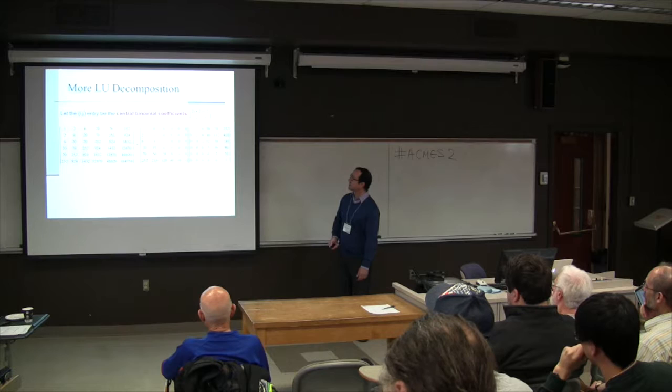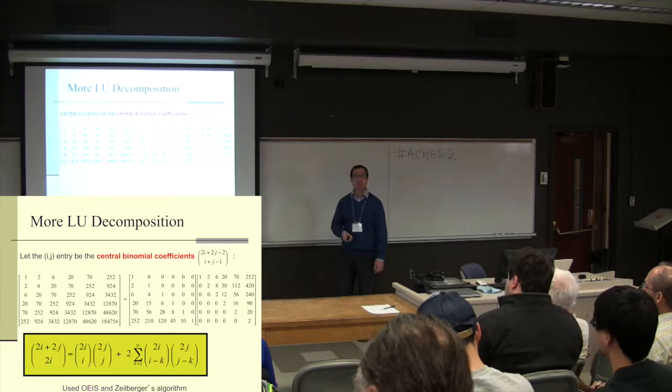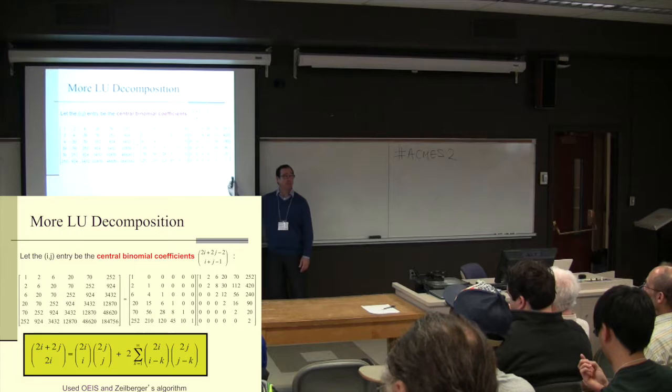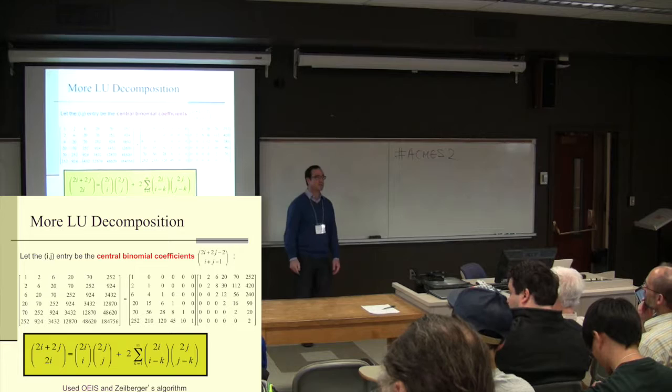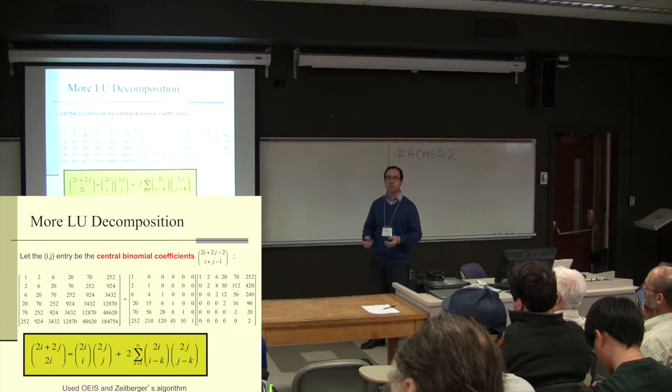Here's a more complicated example with central binomial coefficients — a nice LU decomposition where I use tools like the OEIS to identify the terms and build a more sophisticated combinatorial formula. I have many other examples like this, not only with numbers but with special functions like Legendre polynomials and various others.